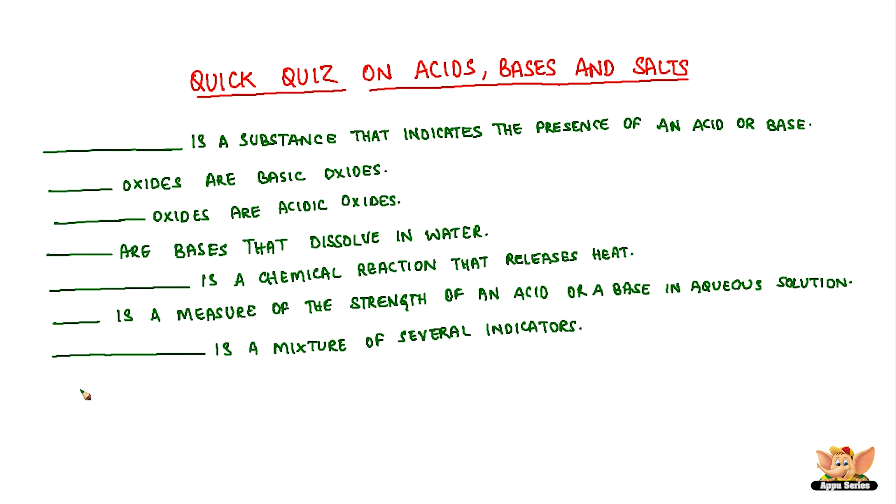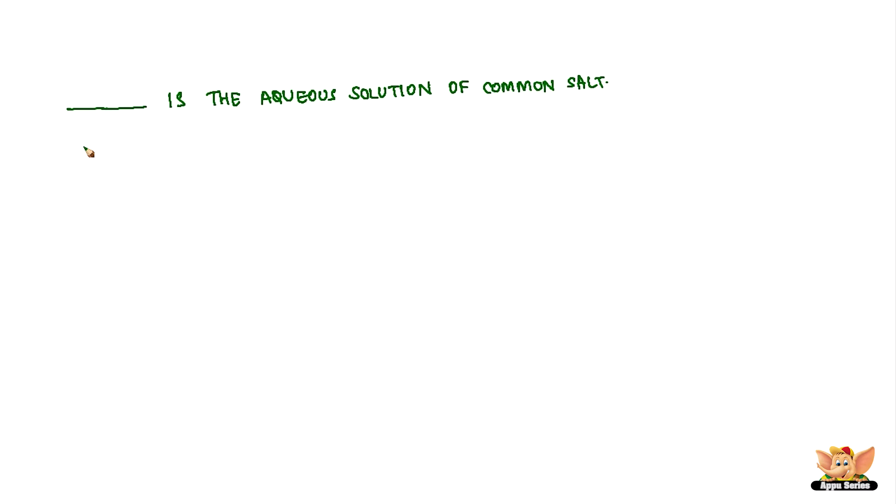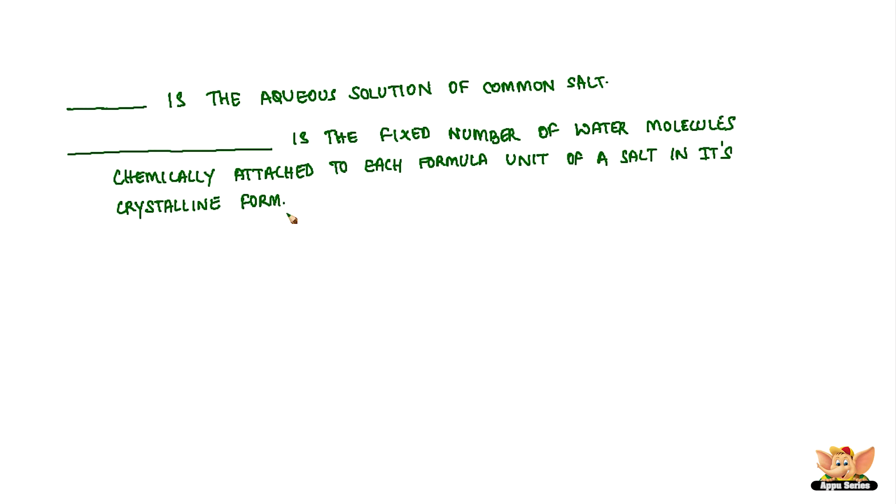Dash is a mixture of several indicators. Dash are ionic compounds that result from the neutralization reaction of an acid and a base. Dash is the aqueous solution of common salt. Dash is the fixed number of water molecules chemically attached to each formula unit of a salt in its crystalline form.